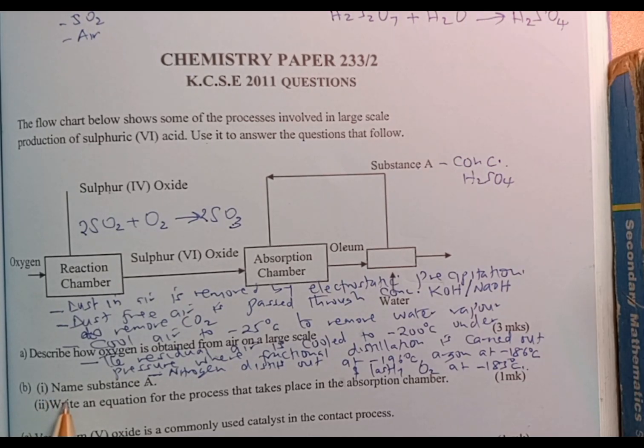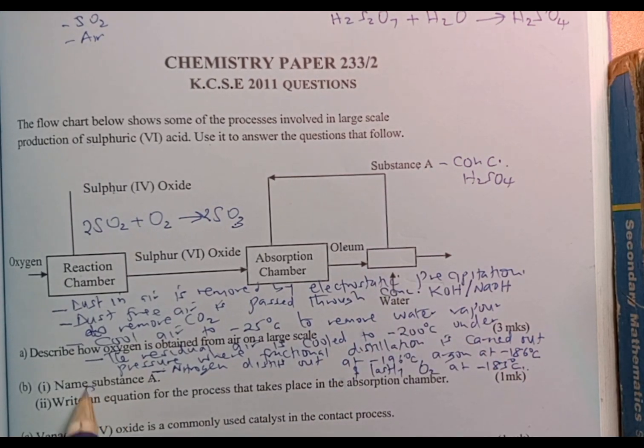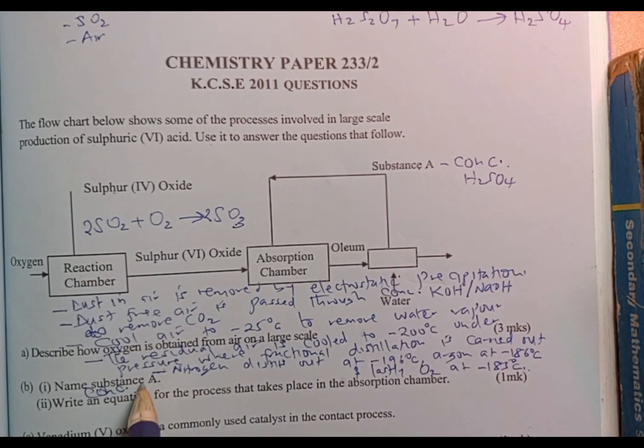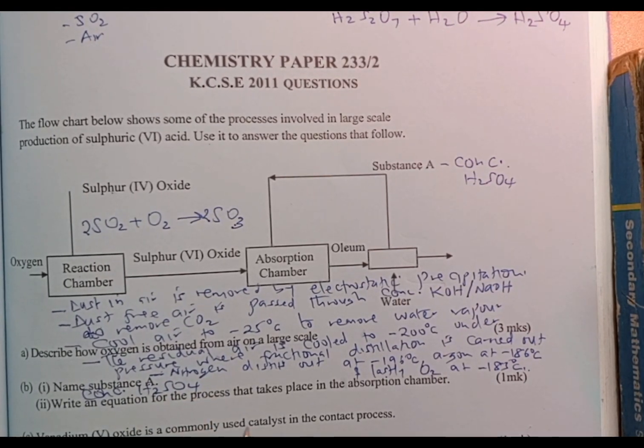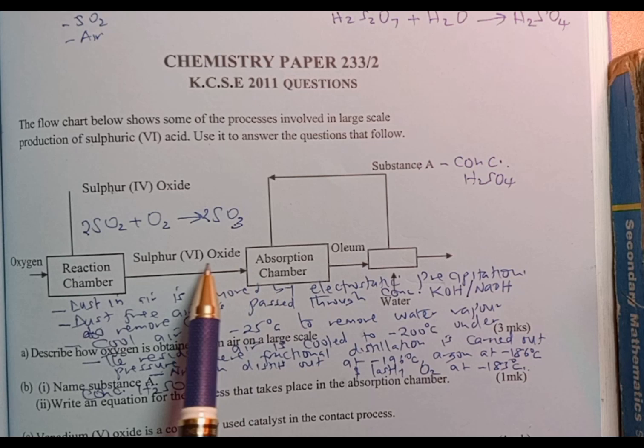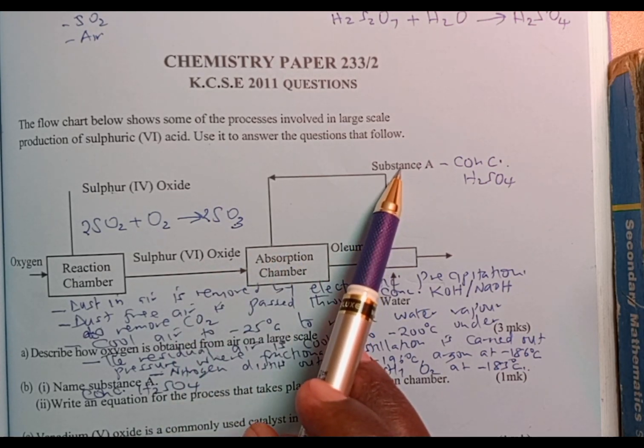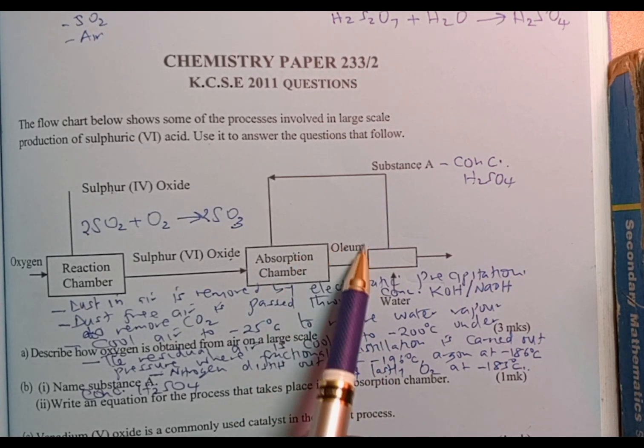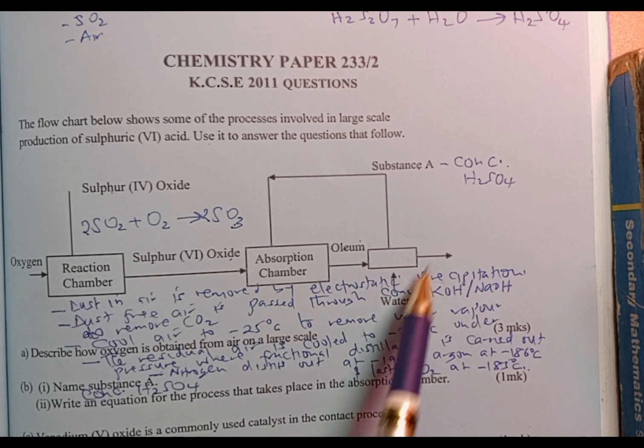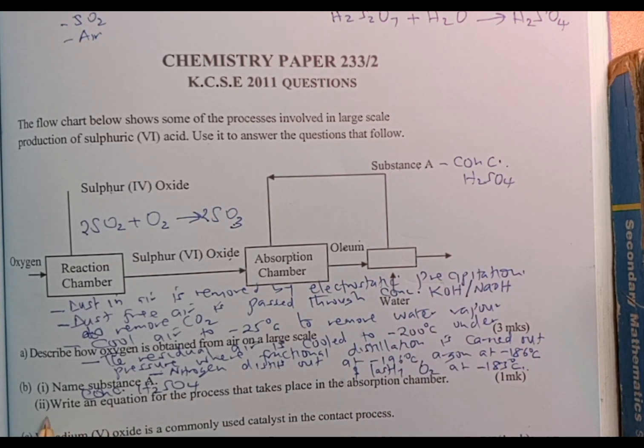Part 1: name substance A. We have already identified substance A as concentrated sulfuric acid. Remember, the sulfur trioxide is usually dissolved in concentrated sulfuric acid to form oleum, which is later diluted with water to form concentrated sulfuric acid.